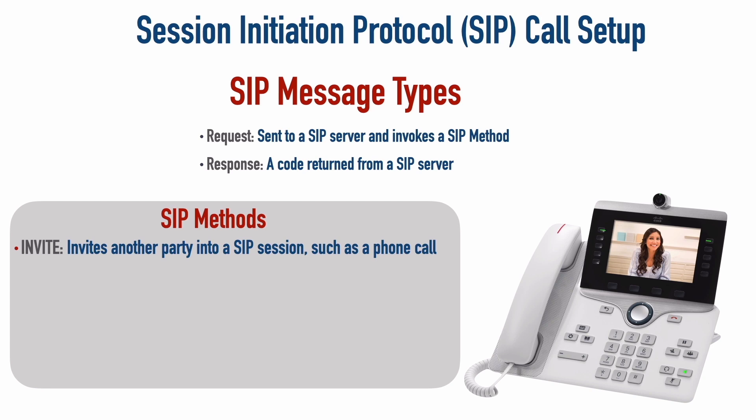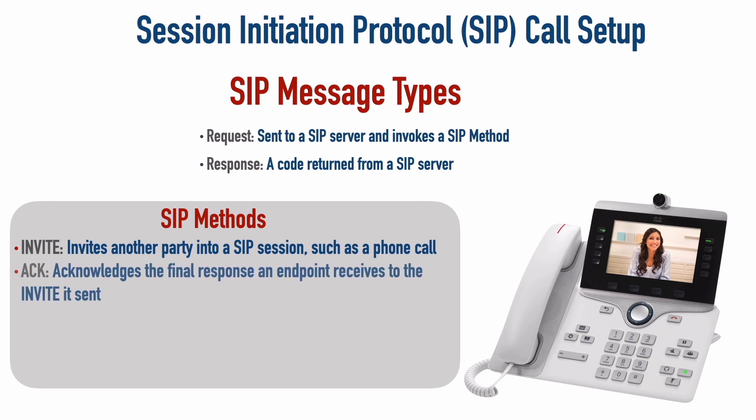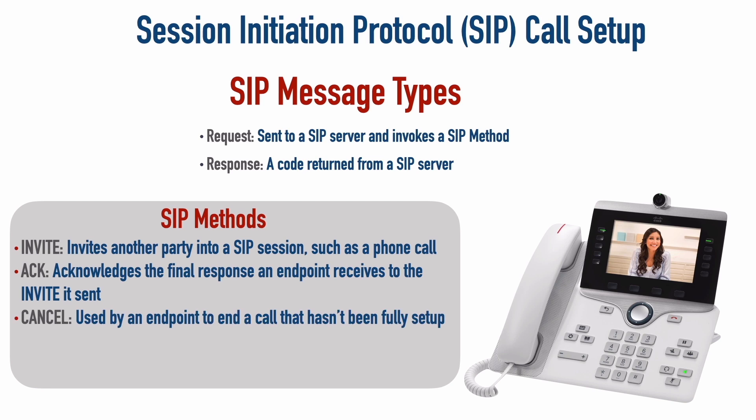Another message is the ACK. This is going to acknowledge the final response that an endpoint receives to the INVITE that it sent. There's going to be quite a bit of back-and-forth negotiation before the call is finally set up, but when the final response is received, that's when the endpoint sends the ACK. A CANCEL message could be used by an endpoint to tear down a call that has not yet been fully set up. The OPTIONS message could be used to find out the capabilities of a SIP server or SIP gateway.